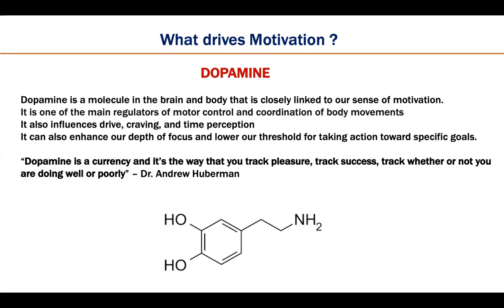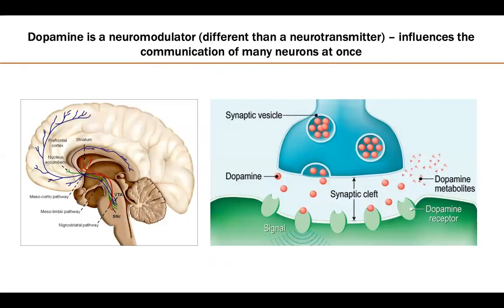How does this molecule do it all? Dopamine is a neuromodulator. Neuromodulators are chemicals which influence the communication of many neurons at once. While neurons talk by releasing neurotransmitters, dopamine as a neuromodulator means that when it is released, its action is carried on by many neurons simultaneously — it is affecting many neurons at one time.